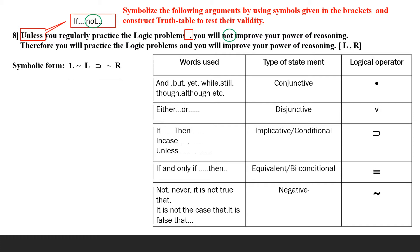We have only one premise. The conclusion is: you will practice logic problems AND you will improve your power of reasoning. The main connective is 'and,' so the conclusion is L dot R. The argument form is: curl P implies curl Q, therefore P dot Q.